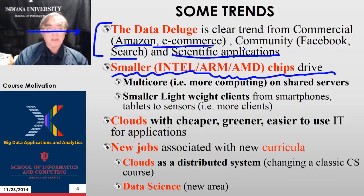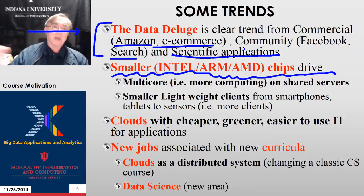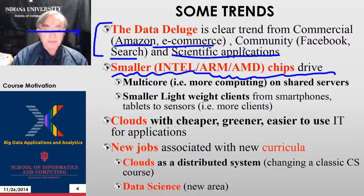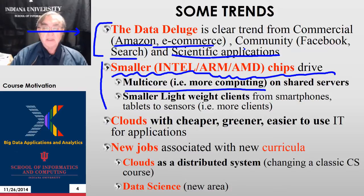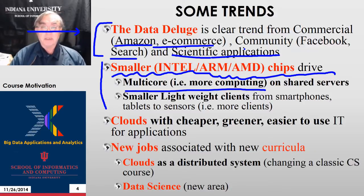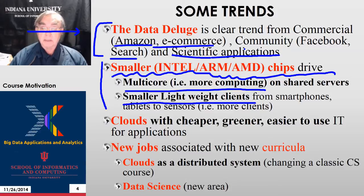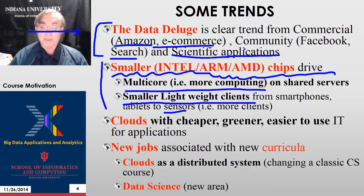Originally, chips got faster and smaller. Now they just get smaller. Faster and smaller was three degrees of improvement — X and Y of the physical construction of the chip and T for the clock speed. Now the clock speed is more or less constant, but the feature size continues to decrease, giving you Moore's law. Because everything is getting smaller, we can put more cores in a chip. This is also driving so-called lightweight clients such as phones, tablets, and sensors.